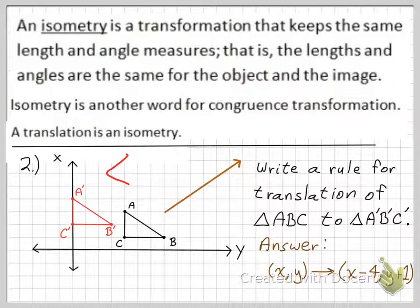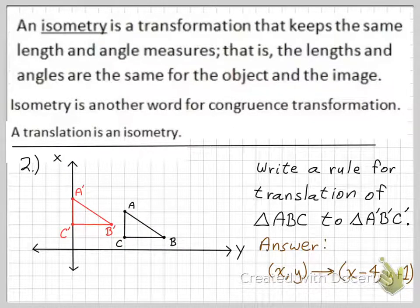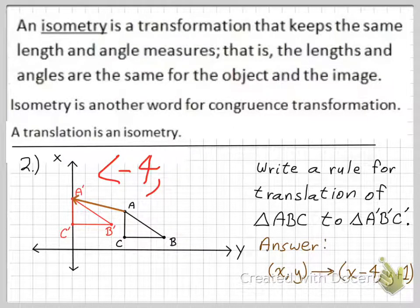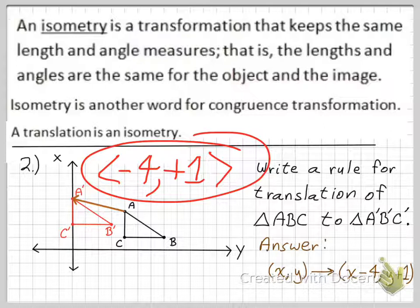We can use a vector to describe how we went from the pre-image to the image. There's the vector going from A to A prime. Going from A to A', you go 4 to the left and 1 up. So in vector form, to describe this translation from the black pre-image to the red image, you would write ⟨−4, 1⟩.